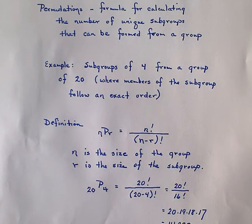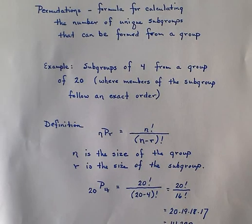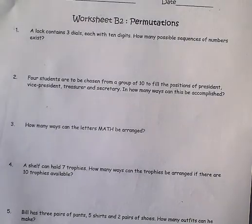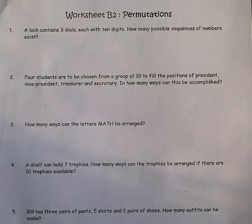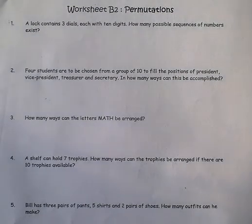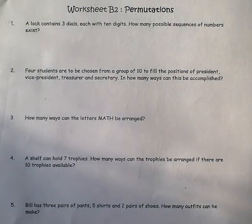Let's look at worksheet B2 that has permutations on it. Question number two is similar to the one just discussed. It says four students are to be chosen from a group of 10 to fill the positions of president, vice president, treasurer, and secretary — four offices. How many different ways can this be accomplished?